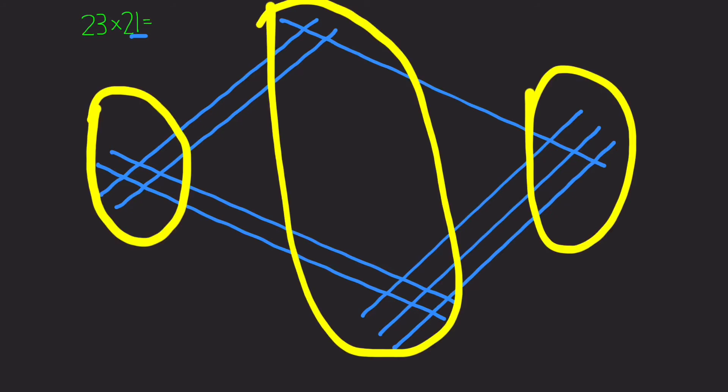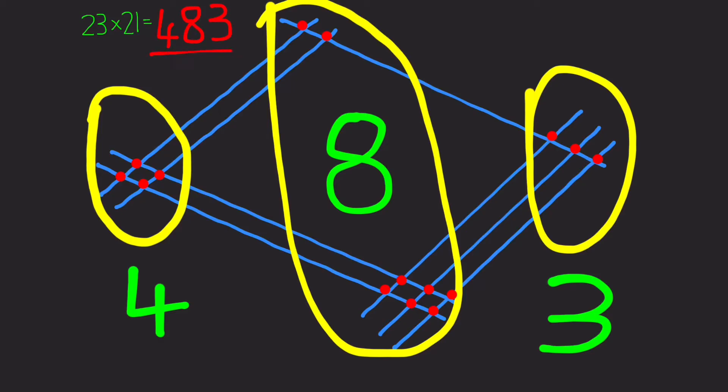Then we look at these three areas and count the number of times the lines cross. So we've got 1, 2, 3, 4 in the first section. In the second section we've got 1, 2, 3, 4, 5, 6, 7, 8. And then in the third section we've got 1, 2, 3. So we put these numbers together and there's our answer: 483.